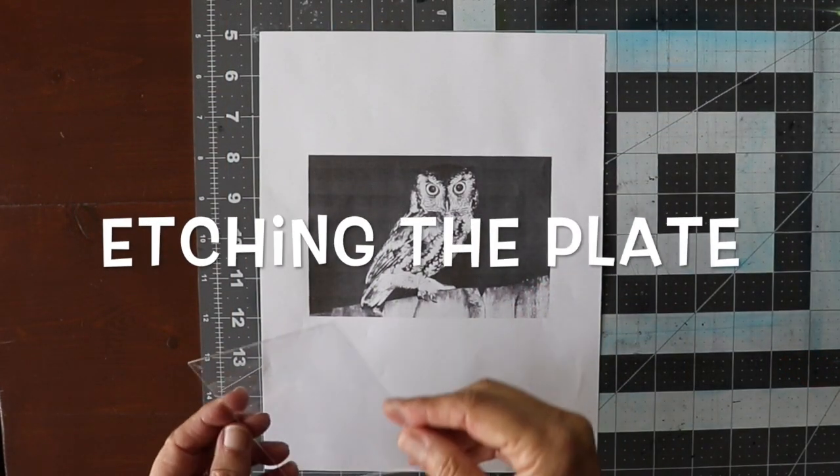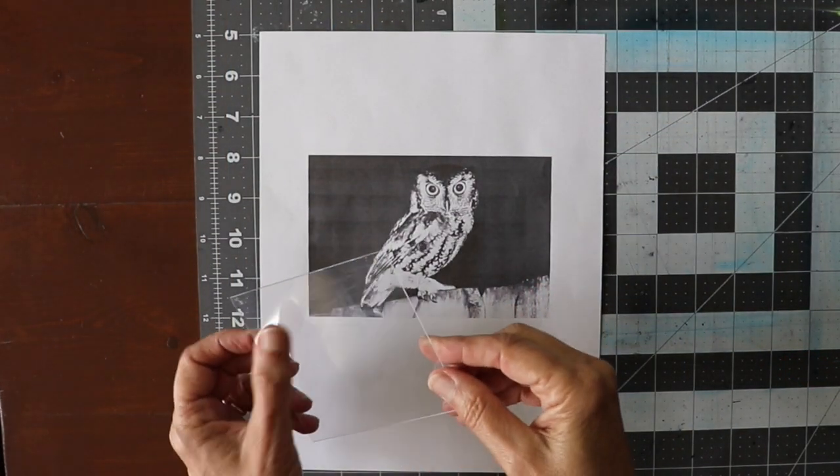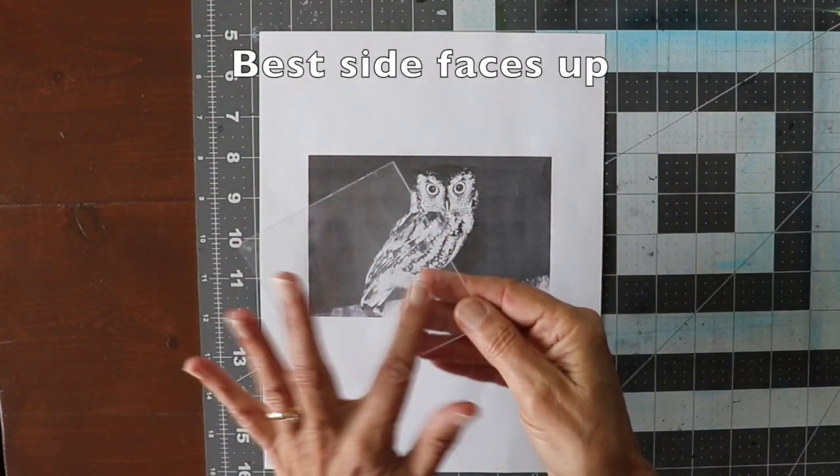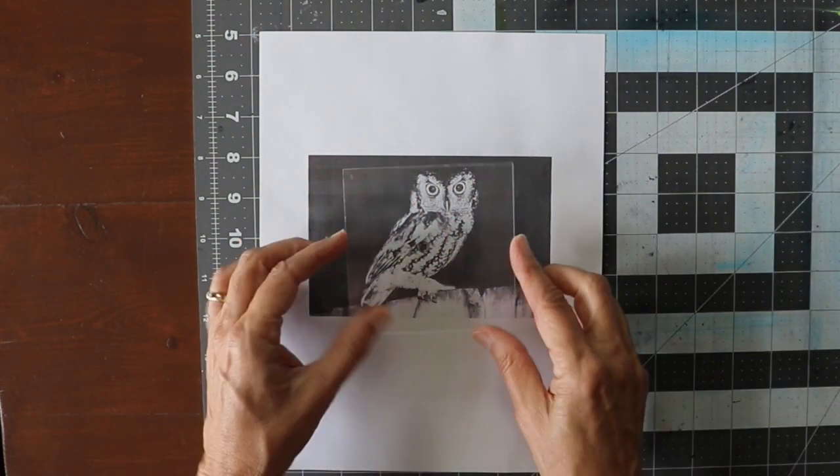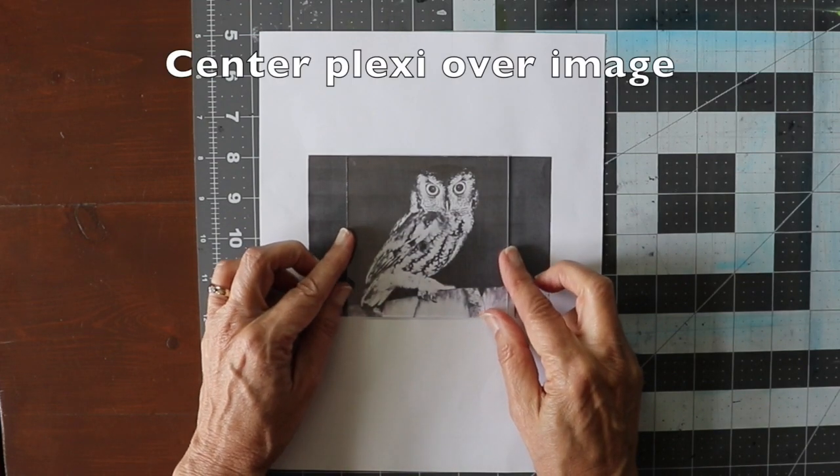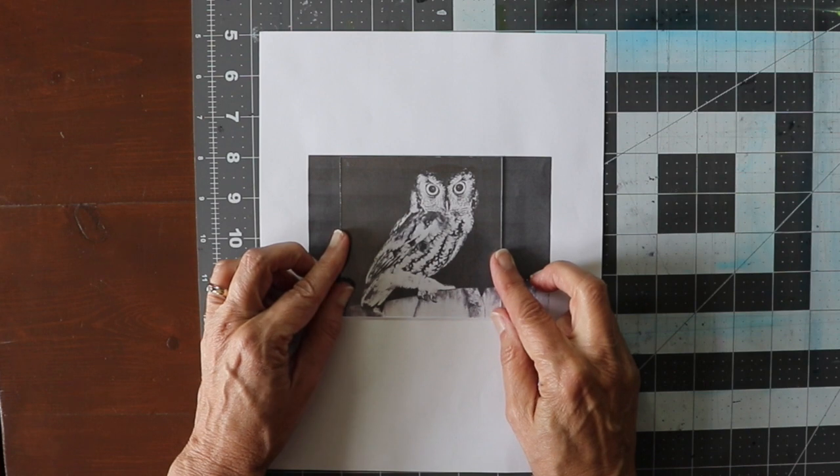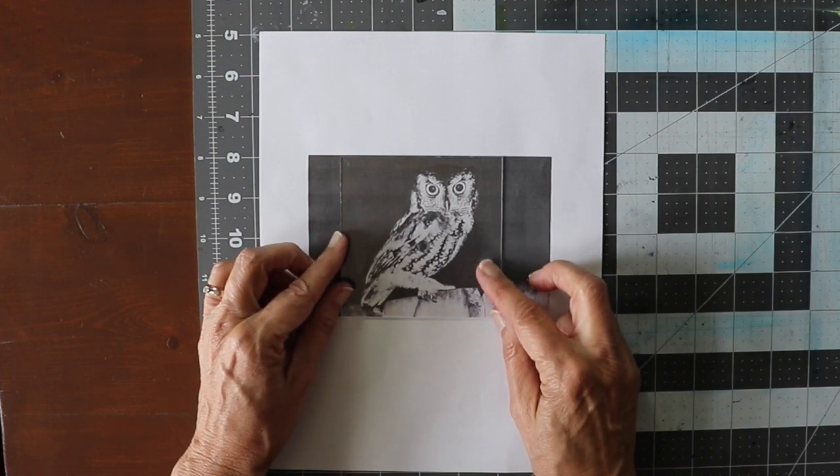Because I'm using recycled plexi, I am checking to see which side has the least amount of scuffs on it. This side seems smoother, so I'm going to position it over my image that I'm going to etch and I'm going to tape it down.